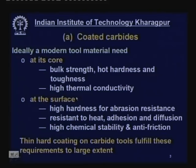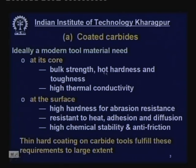At the core, a modern tool material for high production machining needs bulk strength — tensile, compressive, and bending strength — hot hardness for form stability to prevent plastic deformation, toughness to resist fracture, and high thermal conductivity to disperse heat and reduce the thermal gradient. At the surface, high hardness for abrasion resistance, resistance to heat, adhesion and diffusion wear, high chemical stability, and anti-friction are needed. These bulk properties can be provided by conventional uncoated cemented carbides.